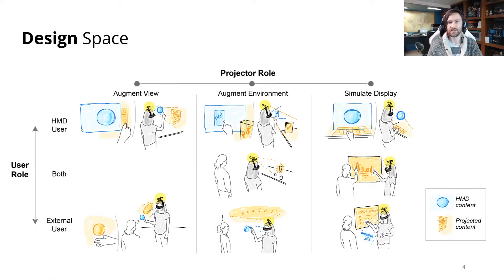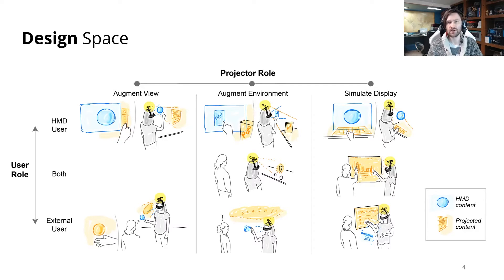We developed a concise design space that explores augmented augmented reality along two dimensions: the user role, which captures who is benefiting from the augmented environment — either the HMD user, the external user, or both — and the projector role, which describes how the actuated projector is used in the environment, which could be augmenting the view of the user, the environment, or to simulate an external display. Together they describe multiple different scenarios where the HMD and projector can be used to assist the user in the space.